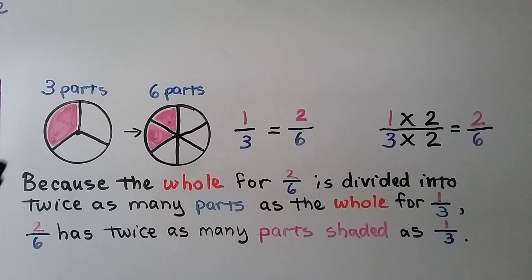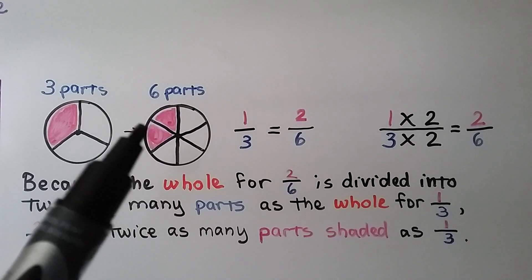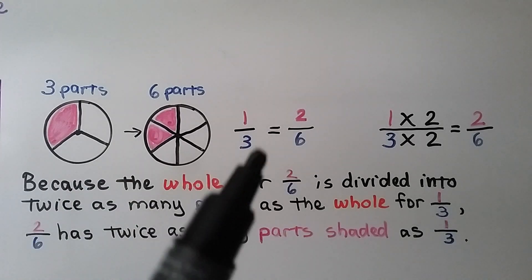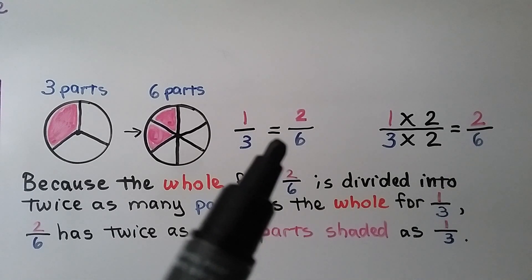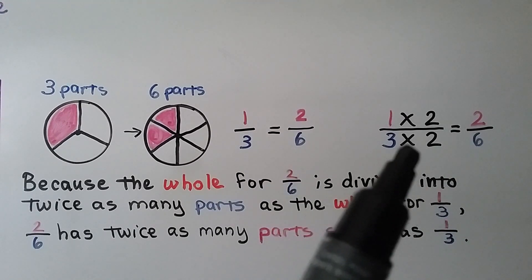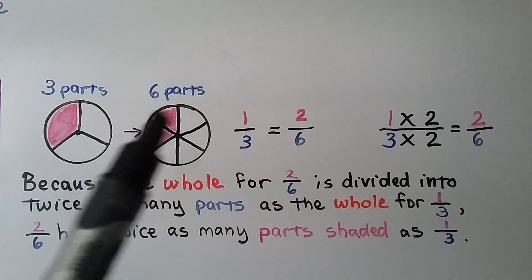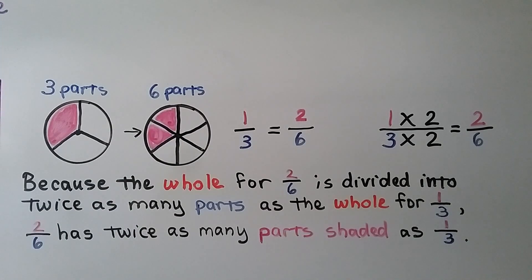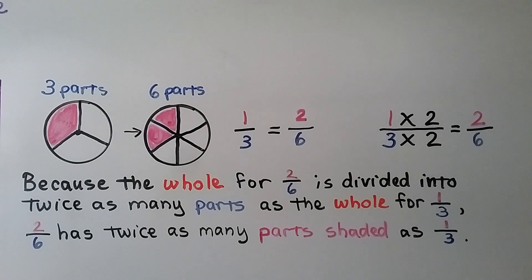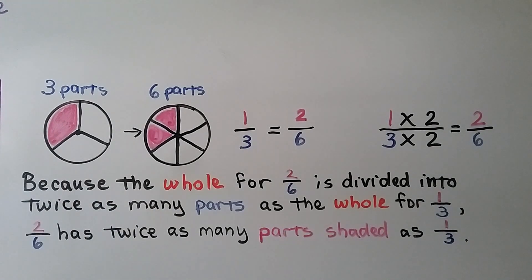This circle is split into three equal parts, and this one is split into six equal parts. One-third is equal to two-sixths. We multiplied both the numerator and denominator by the same number, two, and got two-sixths. Because the whole for two-sixths is divided into twice as many parts as the whole for one-third, two-sixths has twice as many parts shaded as one-third.